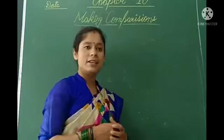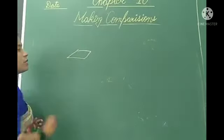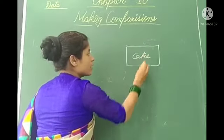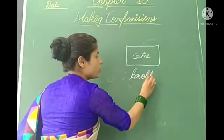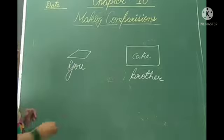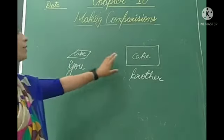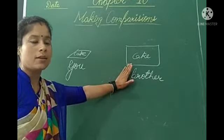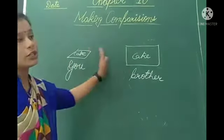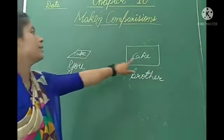Suppose your mother gave you a piece of cake. This is one piece of cake, and this is also a piece of cake. Your mother gave this piece of cake to your brother and this piece to you. What do you see? What is the difference between these two pieces of cake?